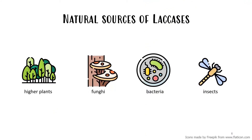Except in higher plants where the enzyme is key for lignification, lacases have been widely studied in fungi where they contribute to degradation of lignin. More recently, many bacterial enzymes have also been studied, and in bacteria they provide protection against hydrogen peroxide and UV radiation. They have also been identified in insects, where their role is hardening of the insect cuticle.